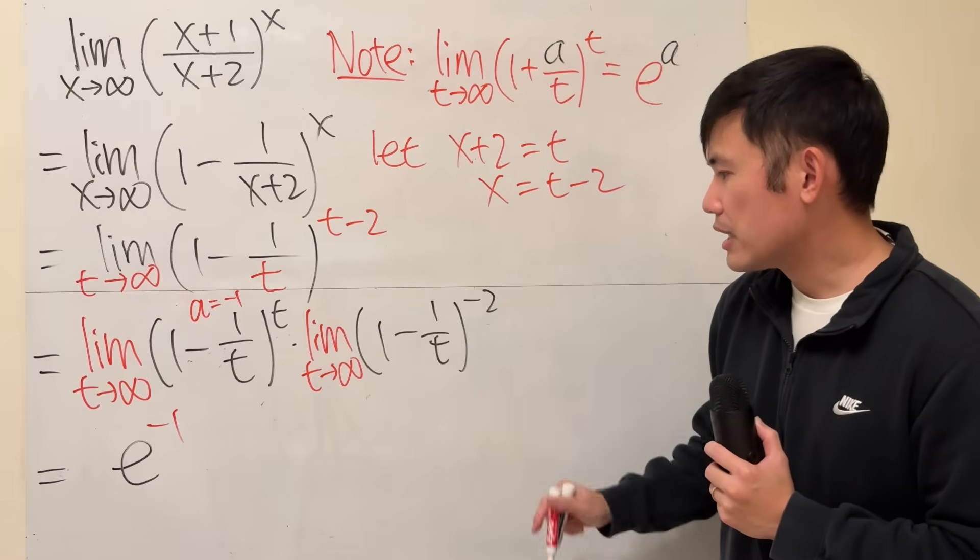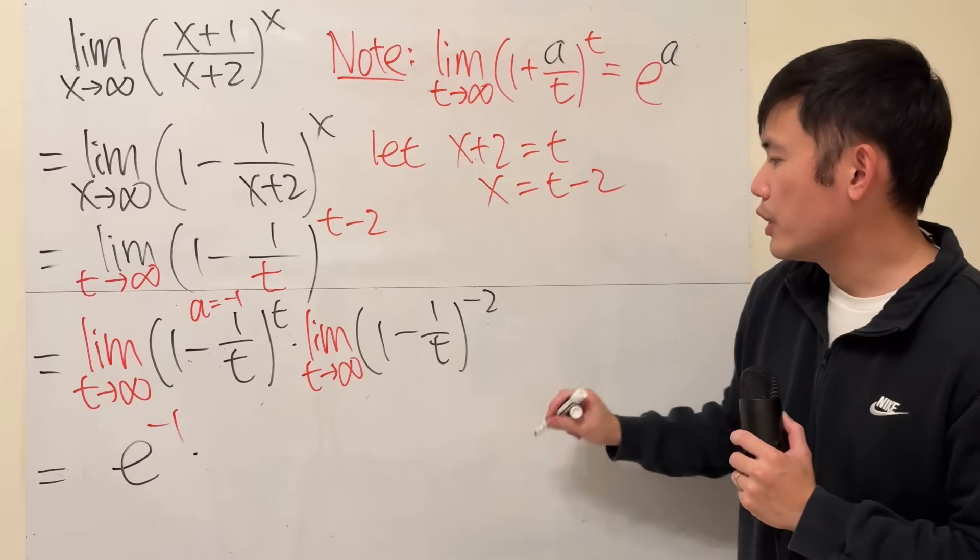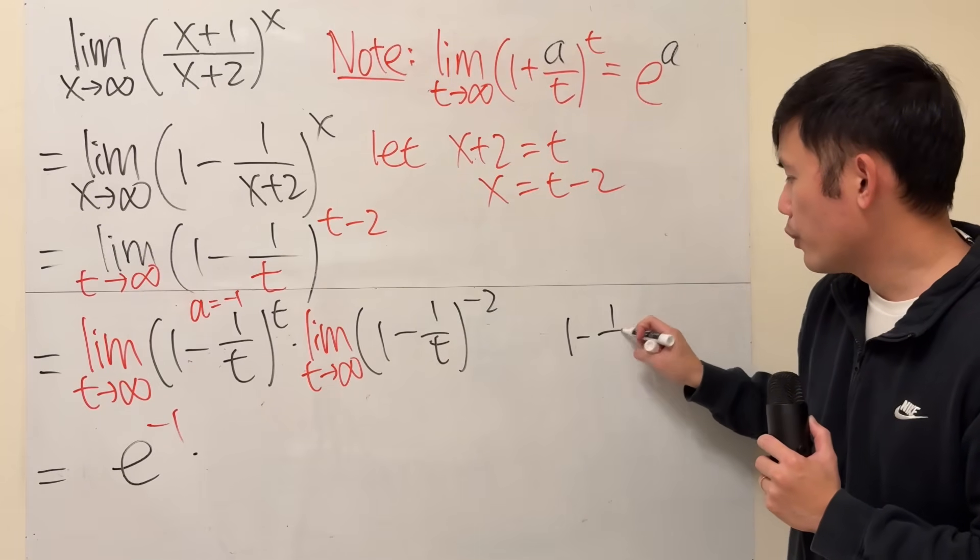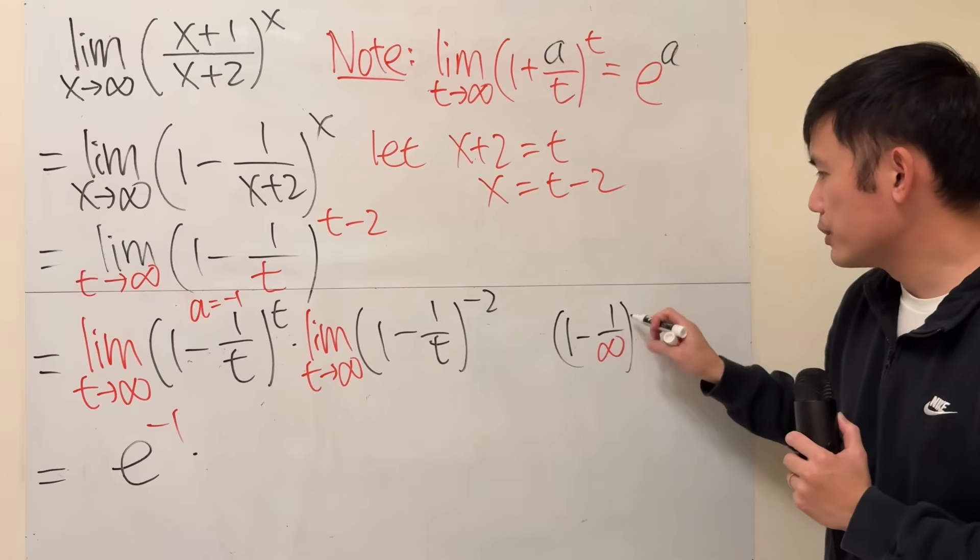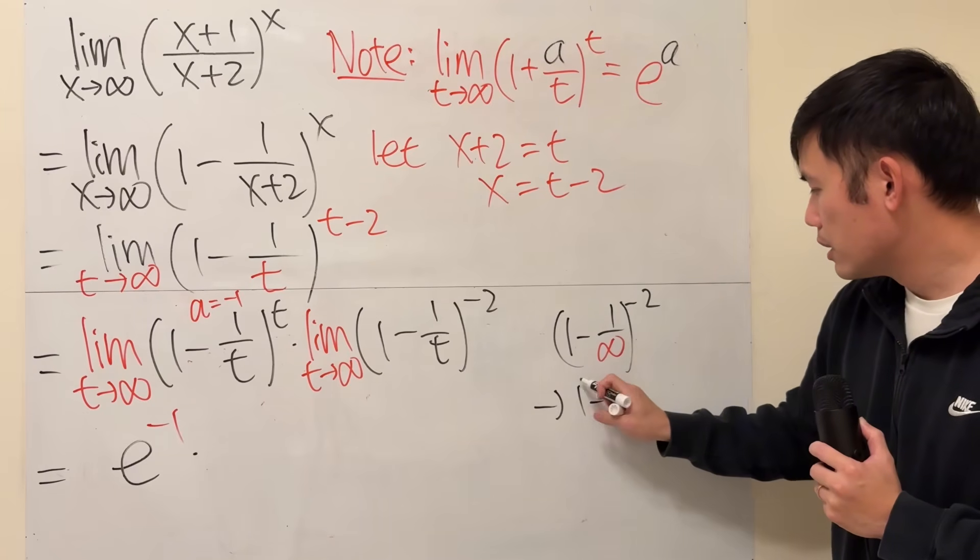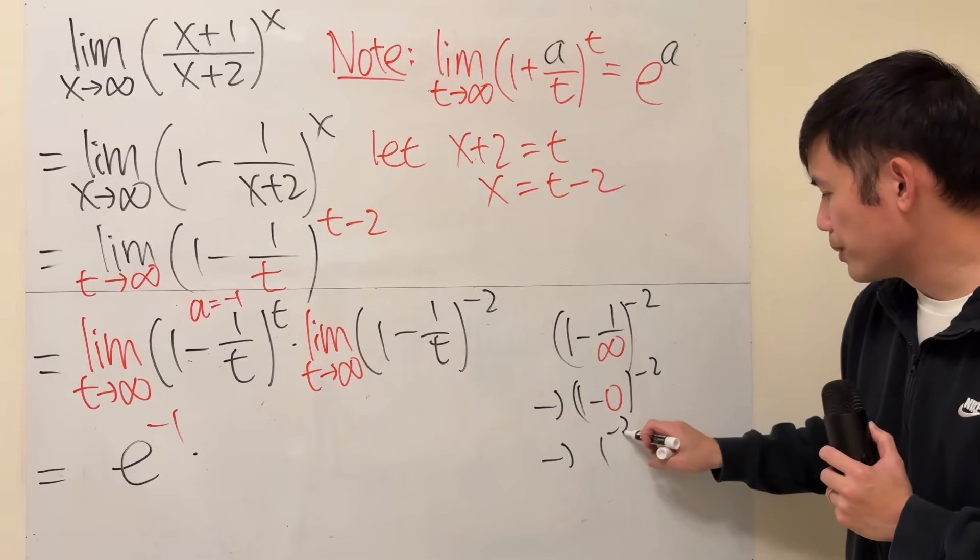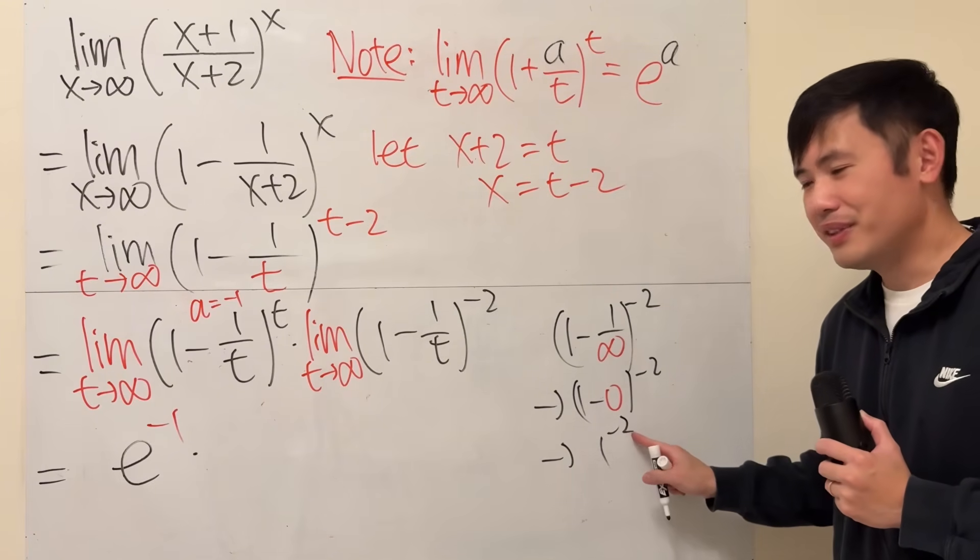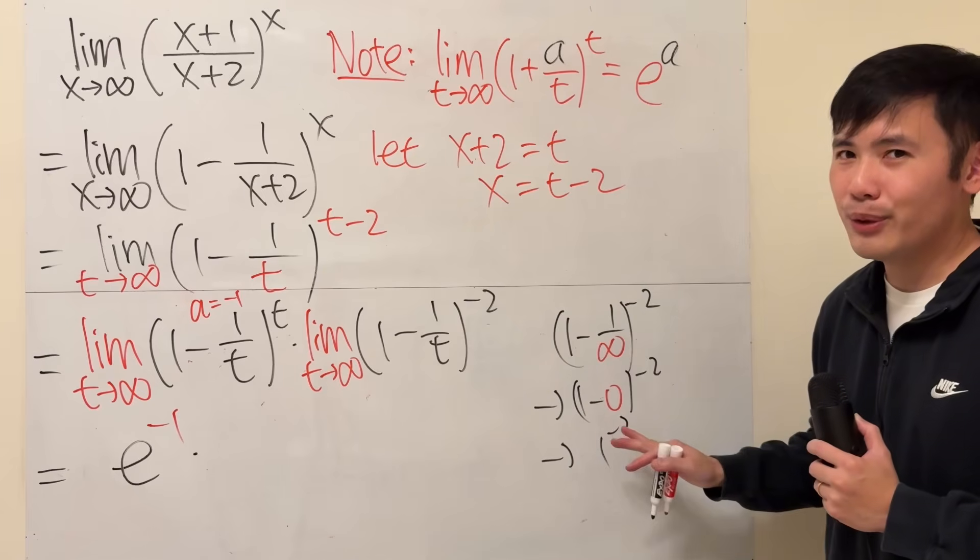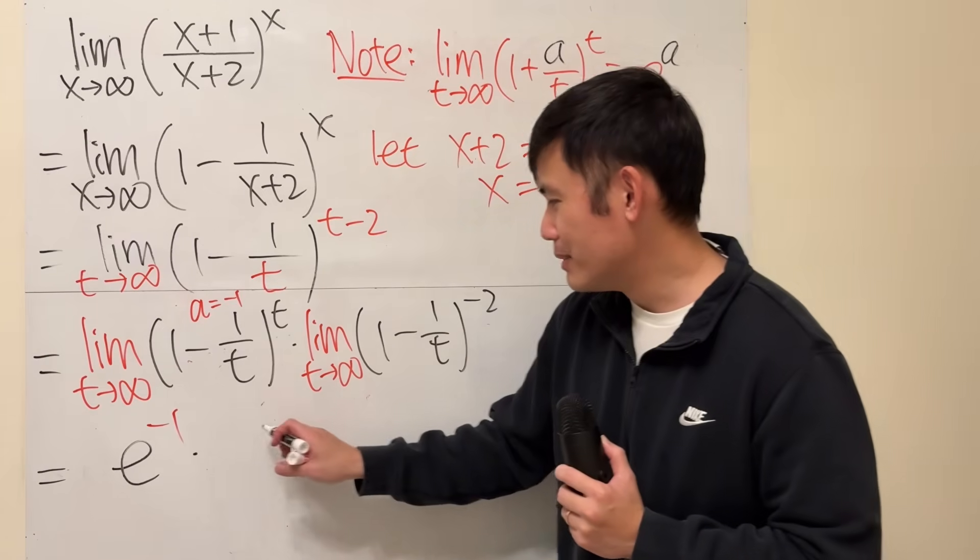Now, as for the second limit, if you put infinity into here, you get 1 minus 1 over infinity and then raised to the negative 2 power. That approaches 0, and then that's just 1 raised to the negative 2 power. Now, if this is not infinity, you have absolutely no worry. That will just give you 1. So, this limit is just 1.